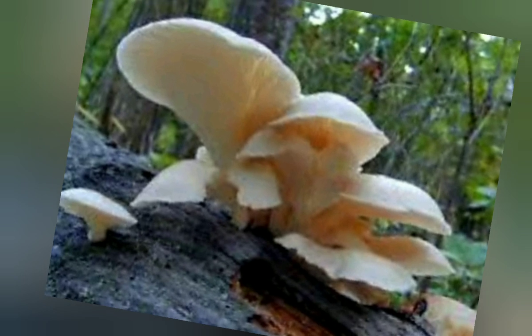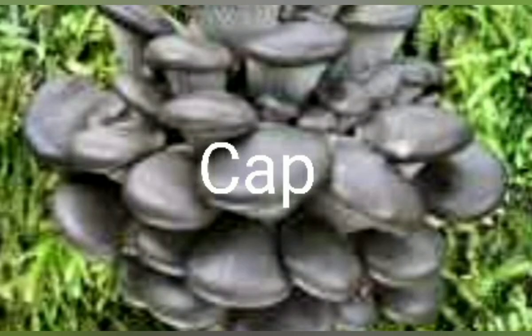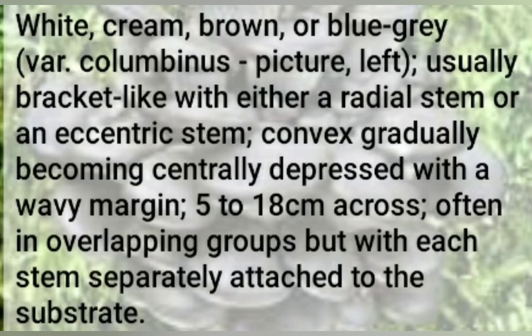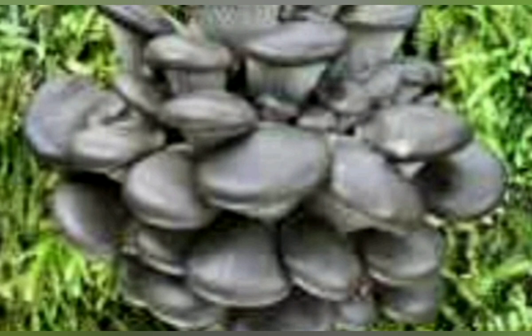Looking at the cap in more detail: the cap is white, cream, brown, or bluish-gray in color, usually bracket-like with either a radial or eccentric stem. It is convex, gradually becoming centrally depressed with a wavy margin, five to eighteen centimeters across. It is often found in overlapping groups, but with each stem separately attached to the substrate. Pictures have been provided to help you understand better.